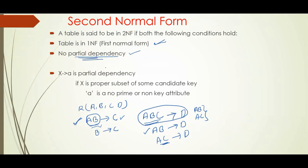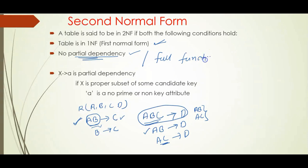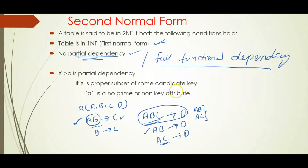So the second normal form states there should not be any partial functional dependencies. In other words, it must have full functional dependency. Let me explain what exactly full functional dependency means.